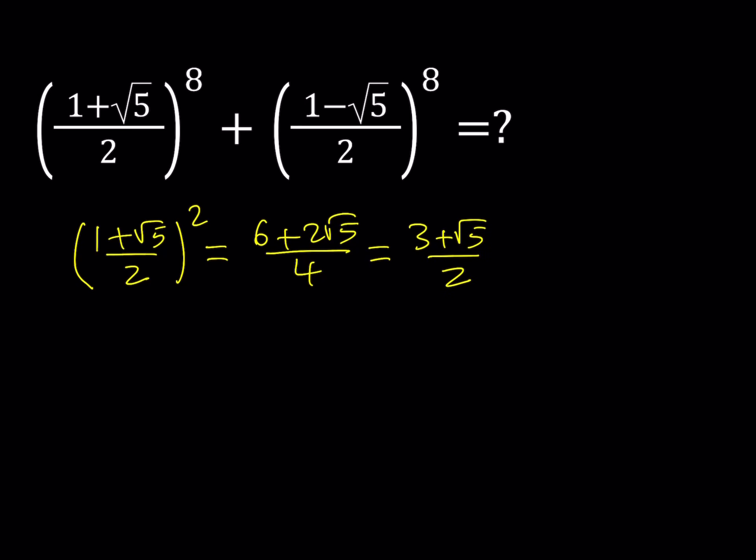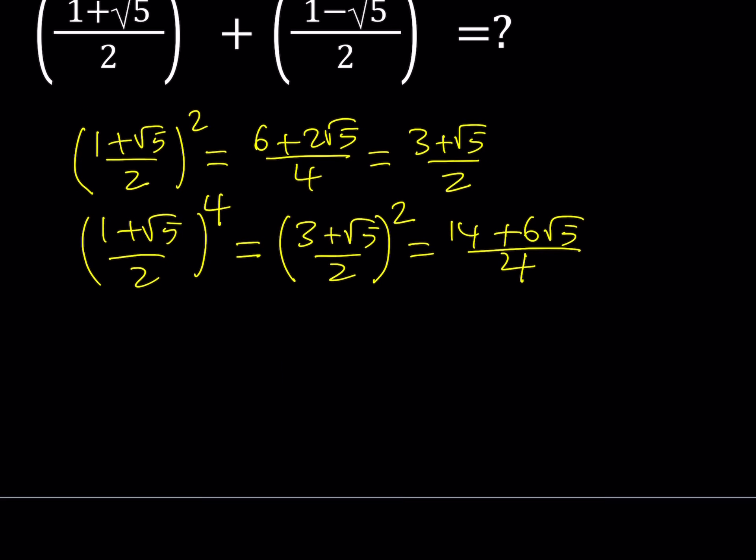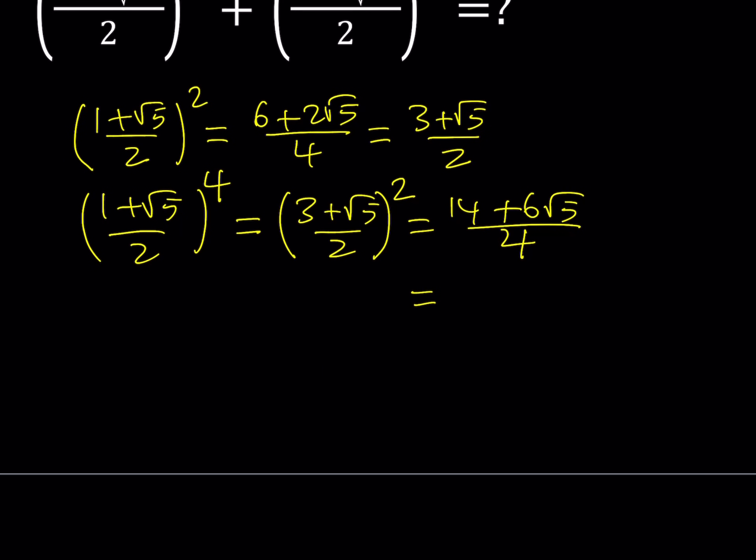And then, in order to get the 4th power, you can just go ahead and take the square and square that again. To get this expression to the 4th power, I just need to take the square and square it one more time. And this is going to give us something like 9 plus 5, which is 14, and then plus 6 root 5 divided by 4. And if you simplify this, you're going to get 7 plus 3 root 5 over 2.